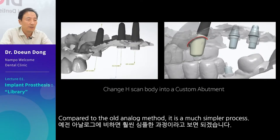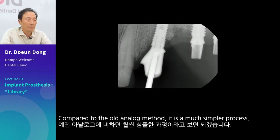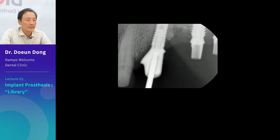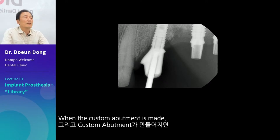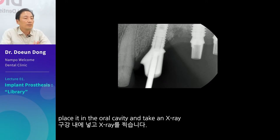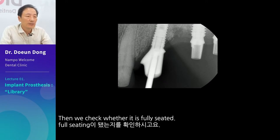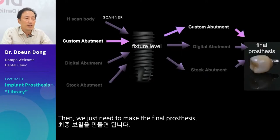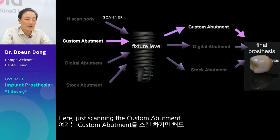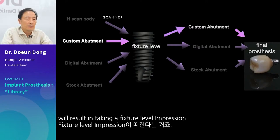Compared to the old analog method, it is a much simpler process. When the custom abutment is made, place it in the oral cavity and take an x-ray to check whether it is fully seated. Then we just need to make the final prosthesis. Scanning the custom abutment will result in taking a fixture level impression.